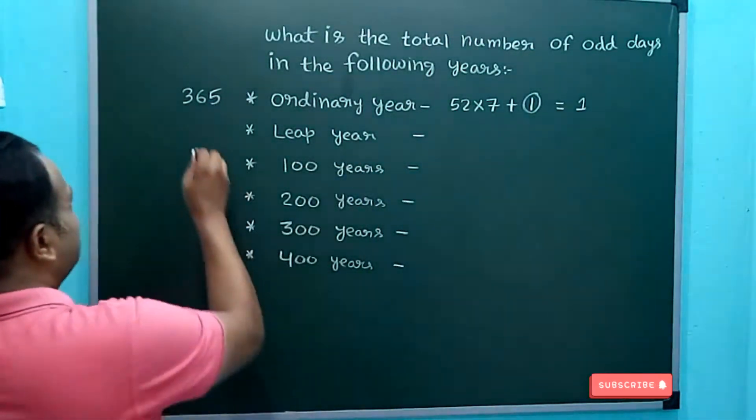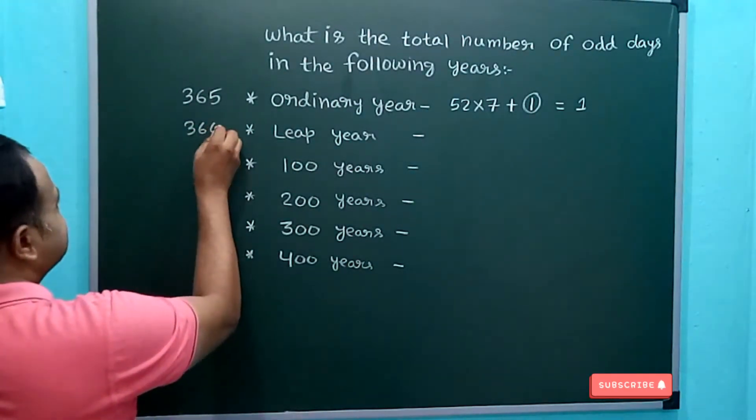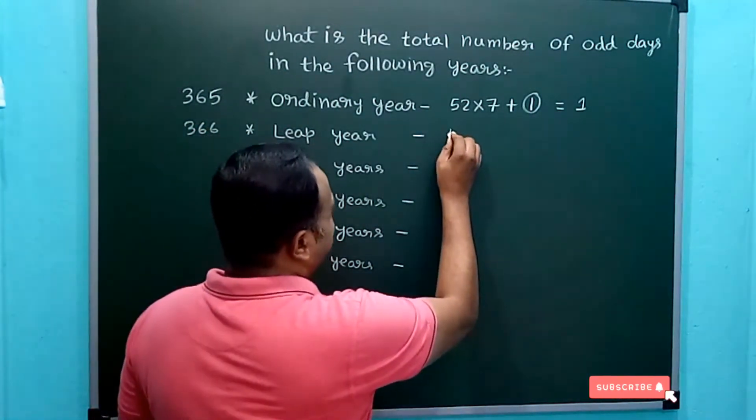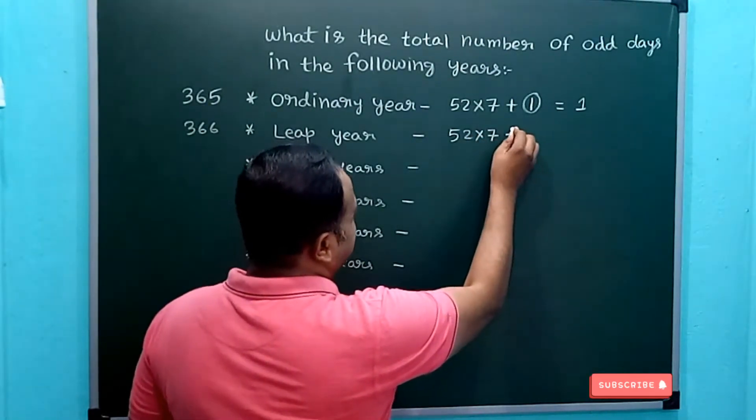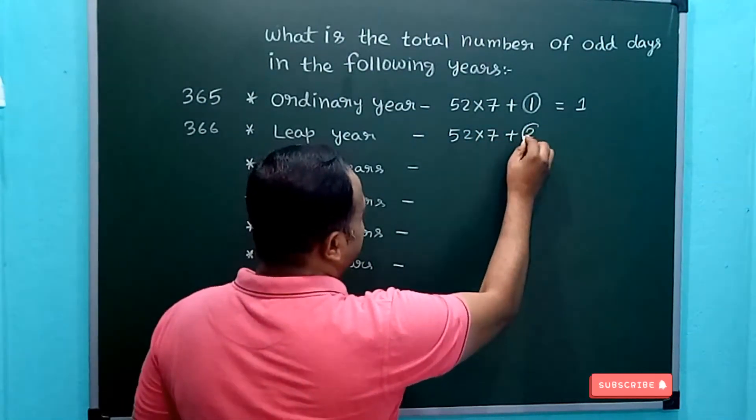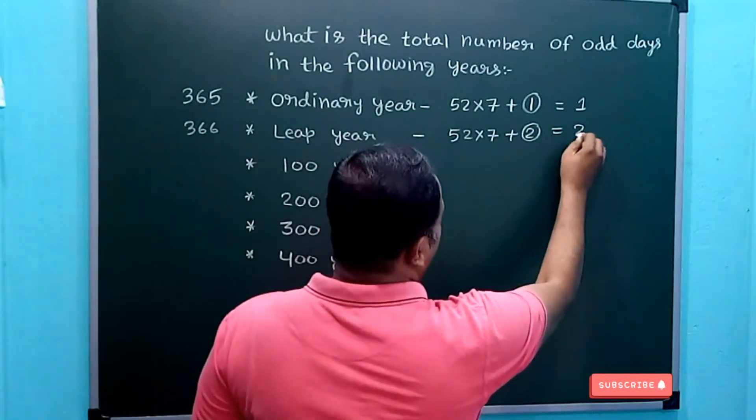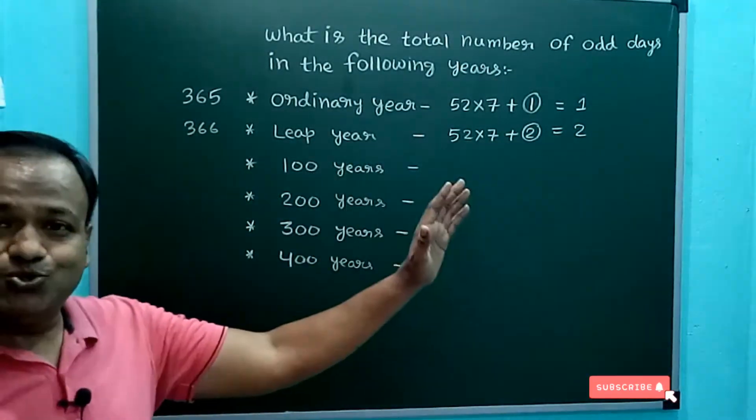In case of a leap year, we know there are 366 days. There are 52 weeks in a year, so if you multiply 52 by 7, we are left with two more extra days. So the odd number of days in a leap year is 2.